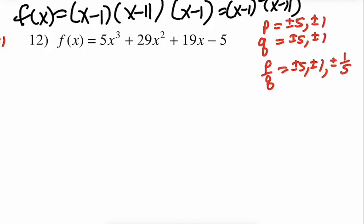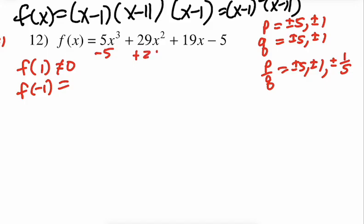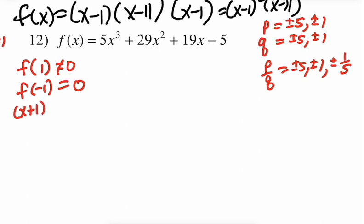Start plugging in: positive 1 gives a large positive number — not 0. All signs are positive with positive input so positive values won't work. Try negative 1: we get negative 5 plus 29 minus 19, which does equal 0. So x plus 1 is a factor we can remove. Put negative 1 in the corner, write coefficients 5, 29, 19, and negative 5. Negative 1 times 5 is negative 5 — write down, add up — repeat for all steps. We get a 0 remainder as expected.